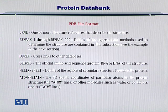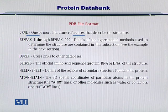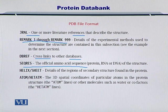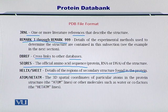Beside these attributes, there is some additional information also available — for instance, the journal reference and some remarks about the structure, as well as cross-references to other databases. You can also specify the amino acid sequence as well as the secondary structure derived from the sequence. And lastly, and most importantly, the atom positions.